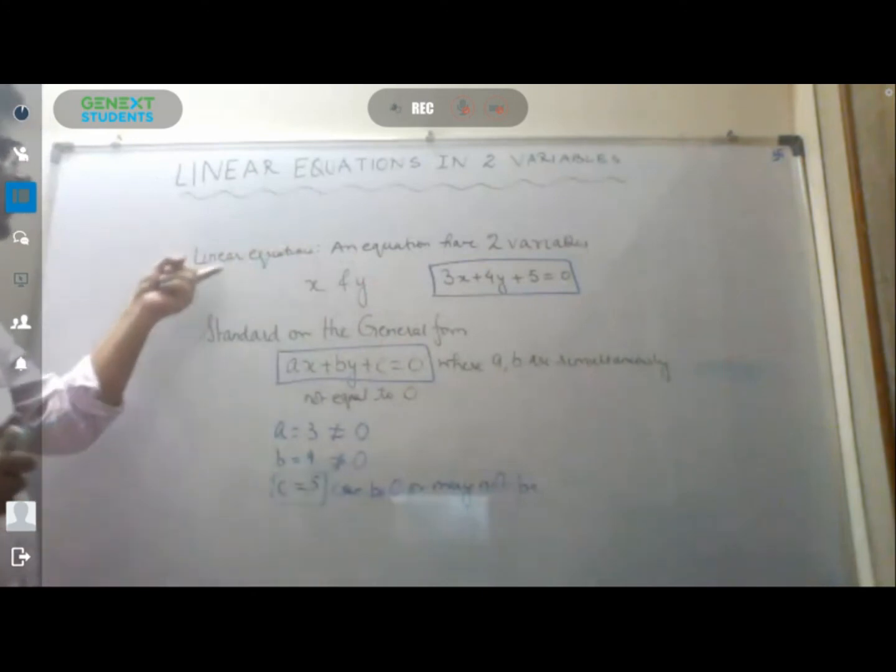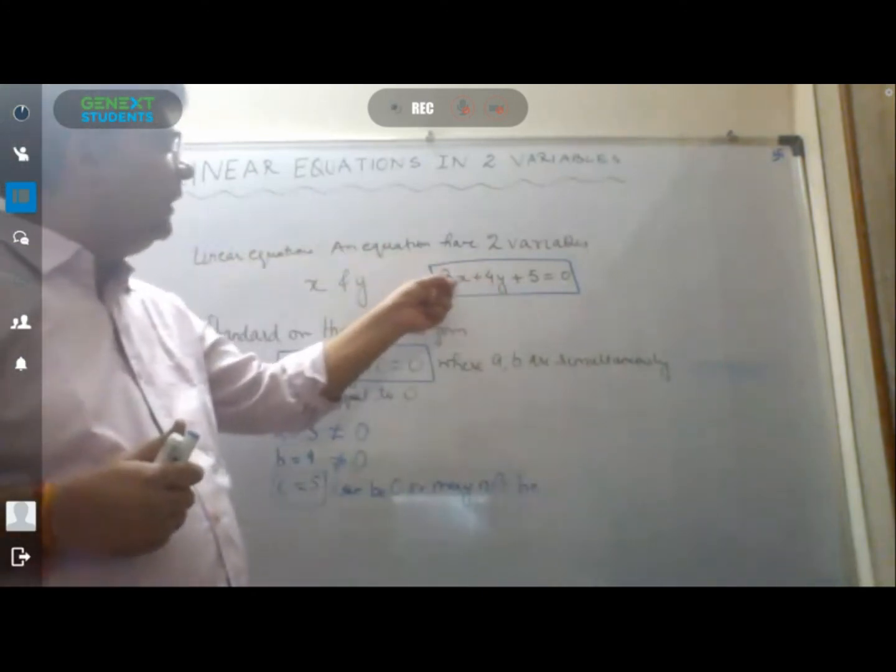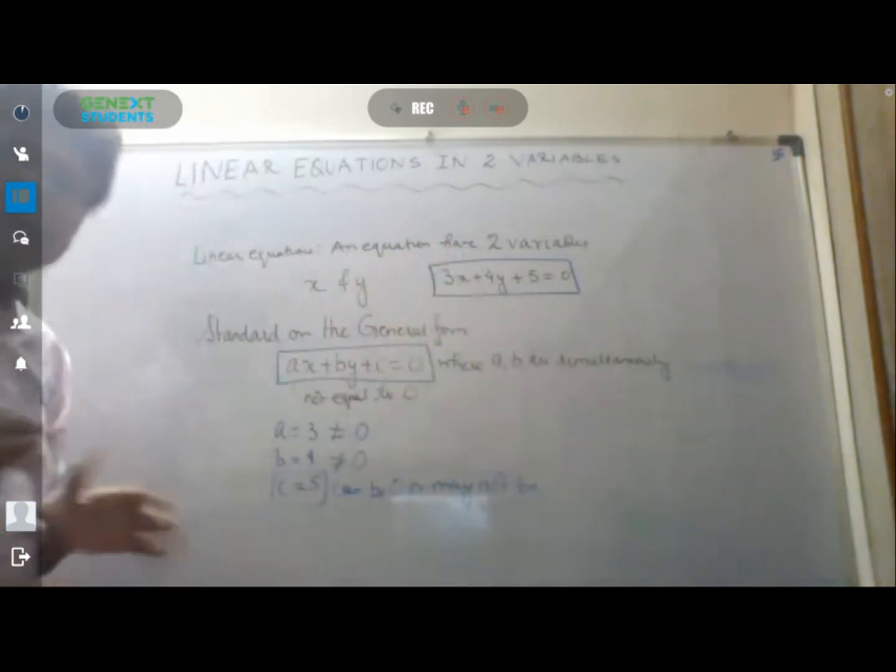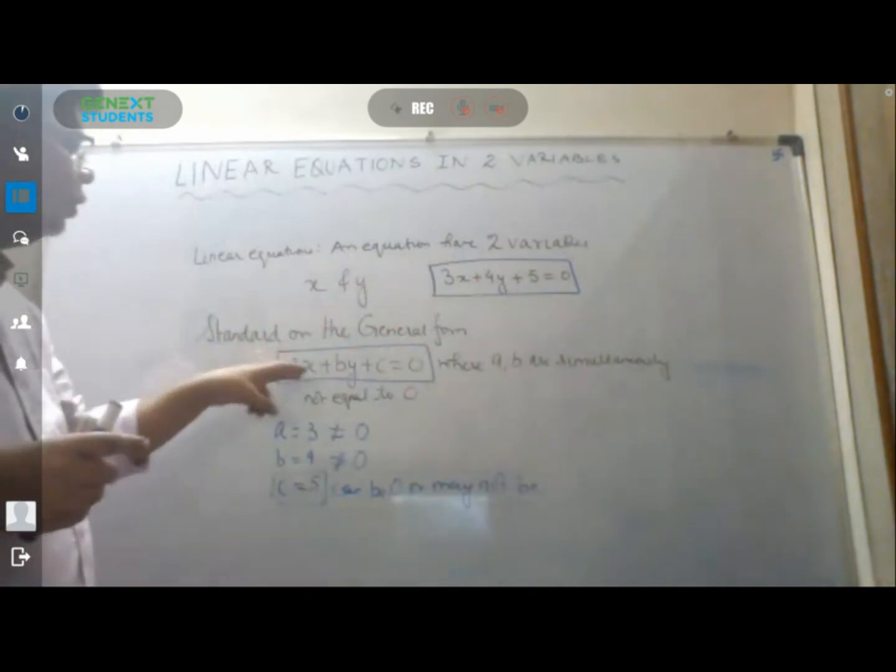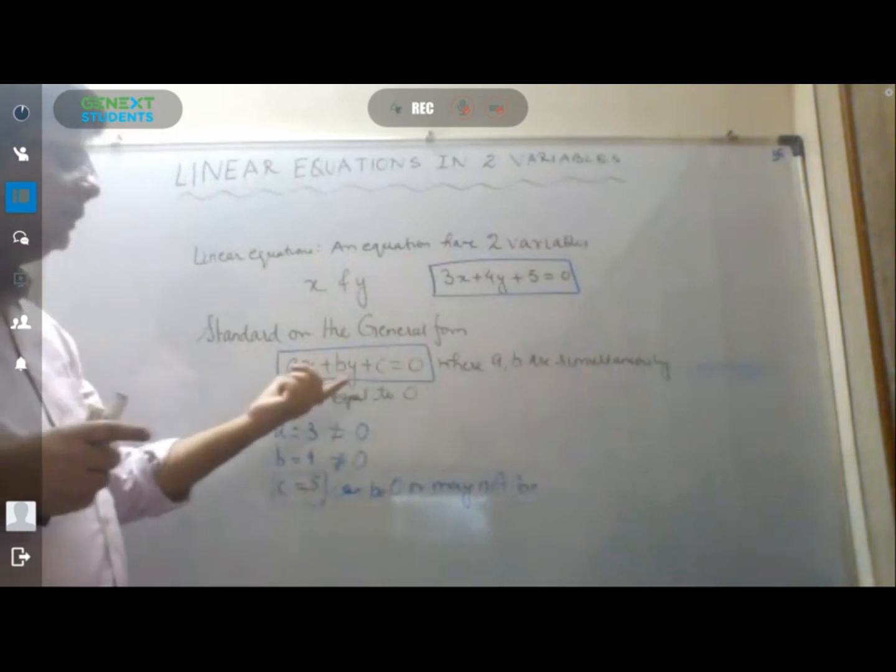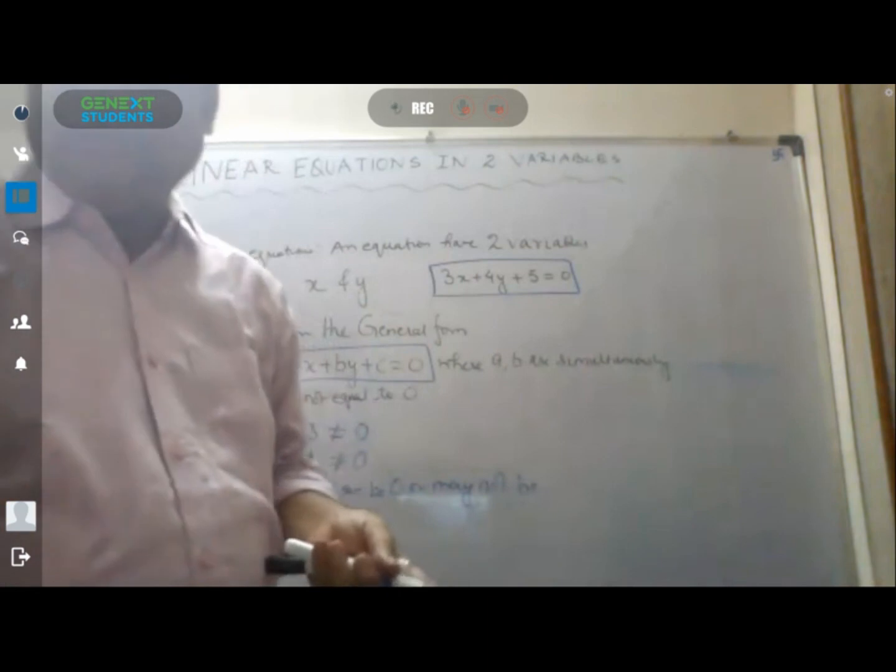In summary, an equation has two variables, x and y, where a and b should not be simultaneously equal to 0. Either one can be 0, but both of them at the same time cannot be 0 because the equation doesn't form. This is the whole thing about linear equations in two variables.